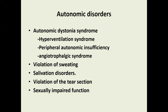Autonomic dysregulation syndrome can include hyperventilation syndrome, peripheral autonomic insufficiency, and angiotrophic disorders. It can also involve violations of sweating, salivation disorders, violation of tear secretion, sexual insufficiency, and so on.